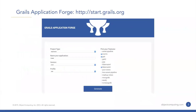A couple of things I want to point out. The Grails application forge, start.grails.org, is the place to go to start creating a new Grails application. That includes a Grails application with Vue.js, because there is a Vue.js profile available from the application forge. Also, Grails 4 RC1 is out and is also available from the application forge. I definitely recommend that if you're wanting to play with Grails or get started with a new project.